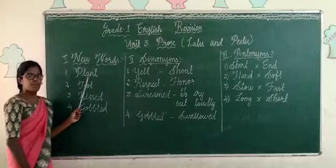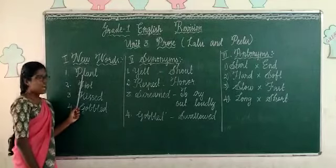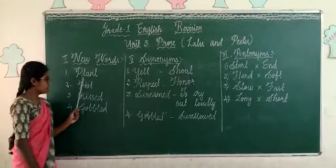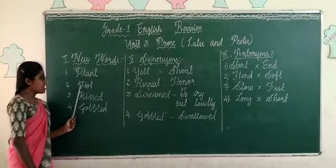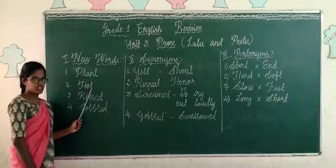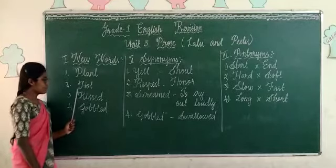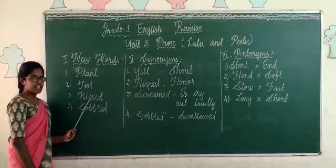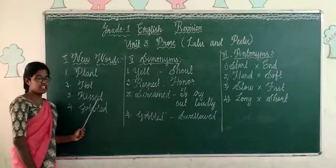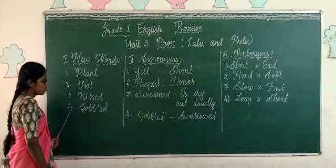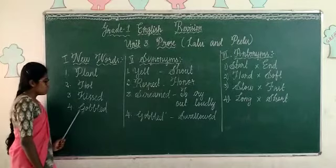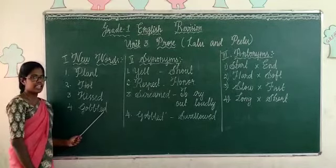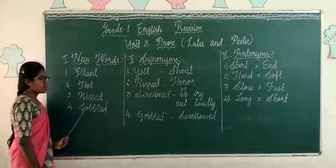First word is plant. P-L-A-N-T. Plant. Second one: hot. H-O-T. Hot. Third one: kissed. K-I-S-S-E-D. Kissed. Fourth one: gobble. G-O-B-B-L-E-D. Gobble.